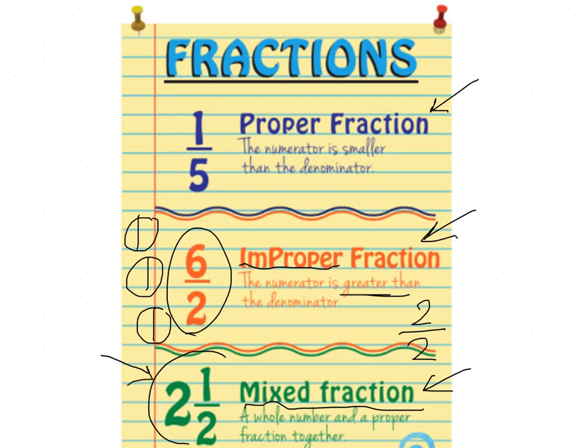The third type is the mixed fraction. We mix a whole number with a fraction — for example, two and a half means two wholes and a half. It is a whole number combined with a proper fraction.